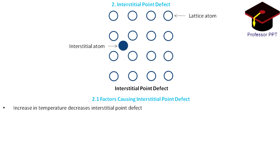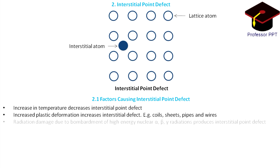Increase in temperature decreases the interstitial point defect. In contrast to vacancy, interstitial point defect decreases with increased temperature. Increased plastic deformation increases interstitial defect and coils, sheets, pipes, and wires exhibit interstitial defect. Radiation damage due to the bombardment of high-energy nuclear alpha-beta-gamma radiations produces interstitial point defects.